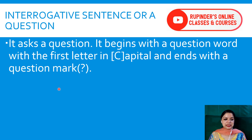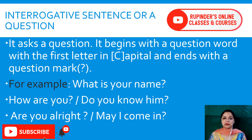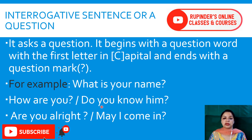Examples of interrogative sentences: 'What is your name?' 'How are you?' 'Do you know him?' 'Are you alright?' 'May I come in?' These are all examples of interrogative sentences. Pay attention — it begins with a question word, but that does not mean all questions will begin with a WH-family word. Here we have: what, how, do, are, and may — used deliberately to give a broader perspective.